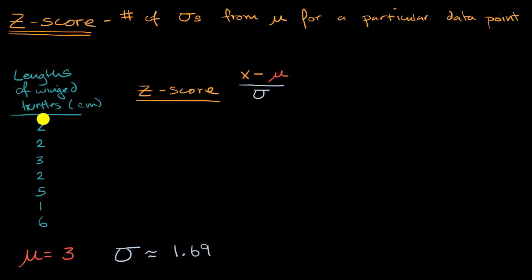So for example, this first data point right over here, if I want to calculate its z-score, I will take two. From that, I will subtract three. And then I will divide by one point six nine. I will divide by one point six nine.